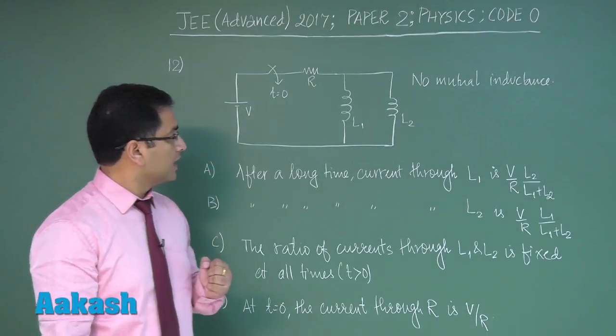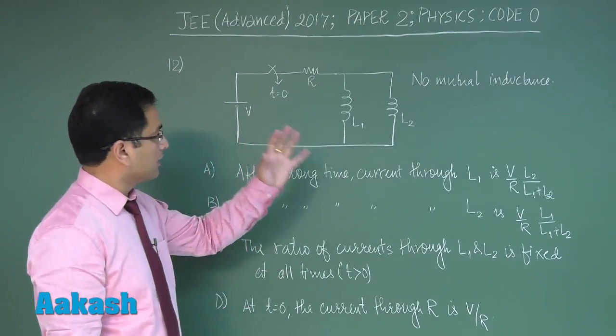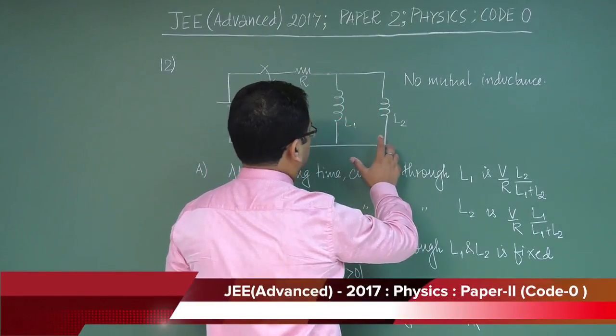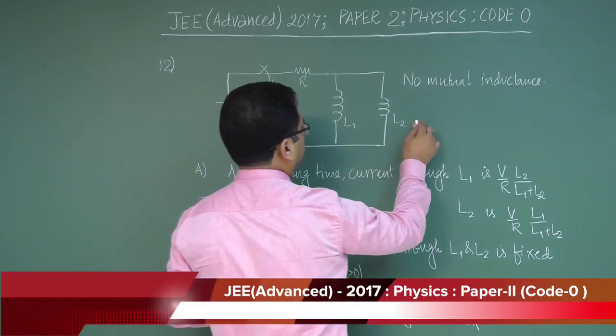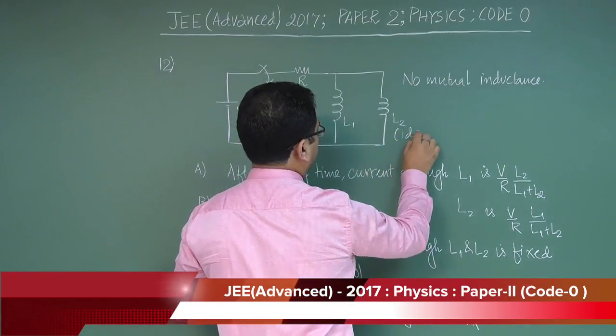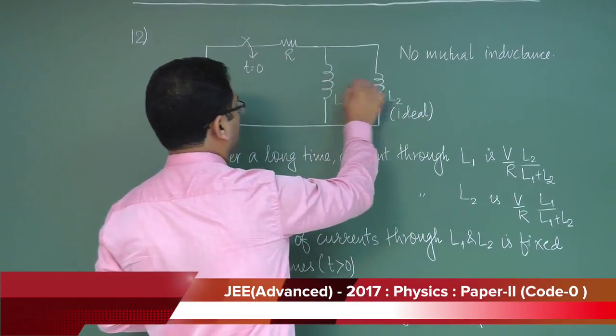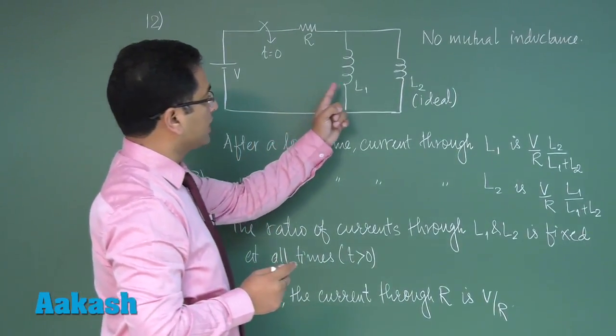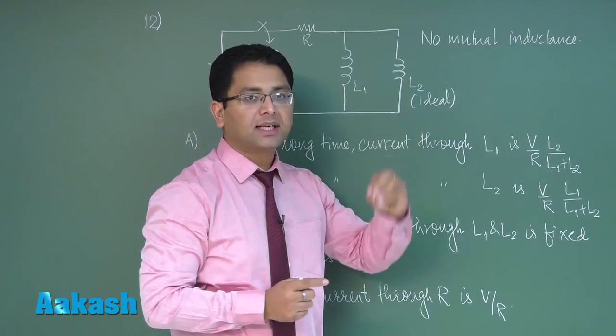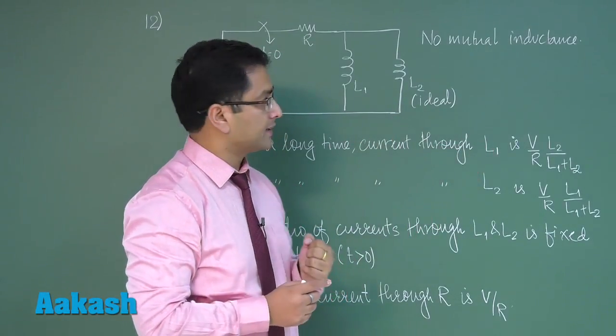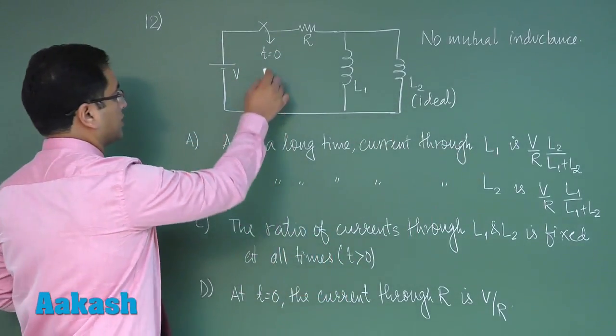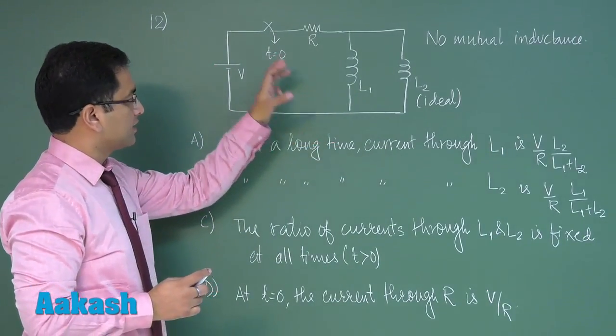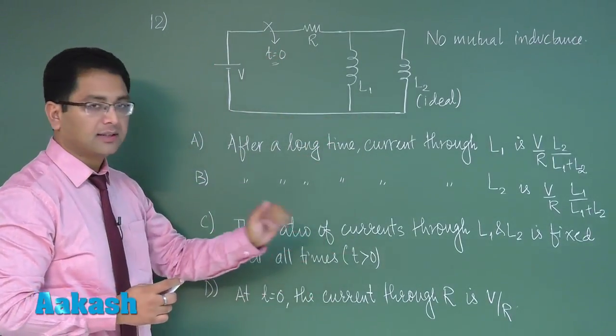Question number 12 is from an RL circuit. This is a typical RL circuit with two inductors and they are ideal, that means there is no winding resistance to be considered. Also, mutual inductance between the two inductors has to be neglected. This switch is closed at t equals to zero and on the basis of this figure we have to answer these options.